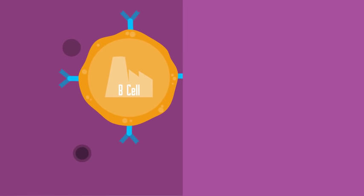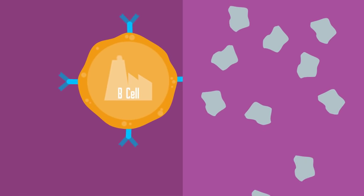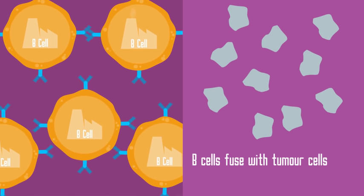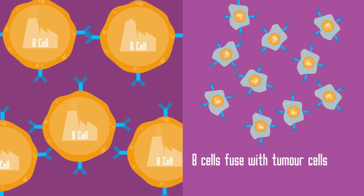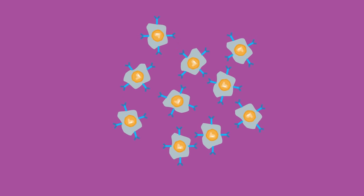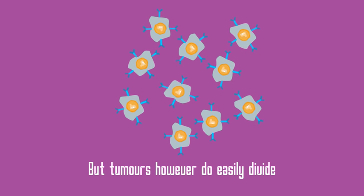The spleen of the mouse is then removed. The B cells in the spleen are isolated and fused with a tumor cell. We need to fuse the antibody producing B cells with a tumor cell because the B cells don't have the ability to divide, but tumors, however, do divide easily.